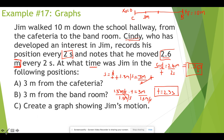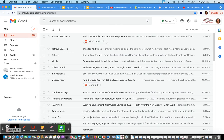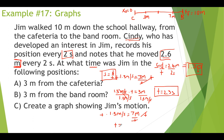Part B: 3 meters from the band room would be at a position of 7 total meters from the origin. Same process — speed equals distance over time: 1.3 m/s equals 7 meters divided by T. Multiply both sides by T, then divide both sides by 1.3 m/s to get T by itself. T equals 5.4 seconds. So at 5.4 seconds, Jim will be 7 meters away.